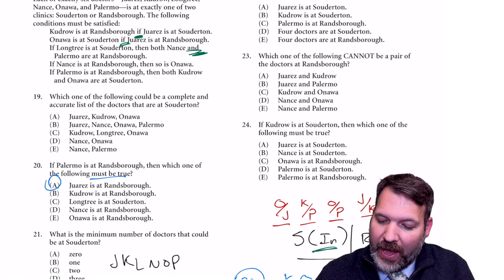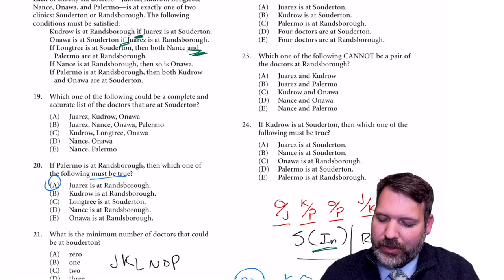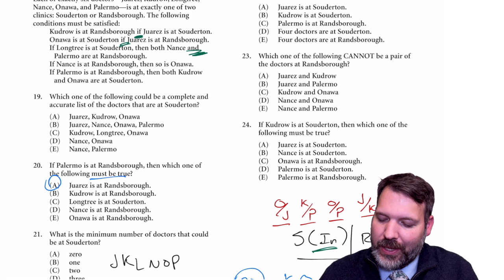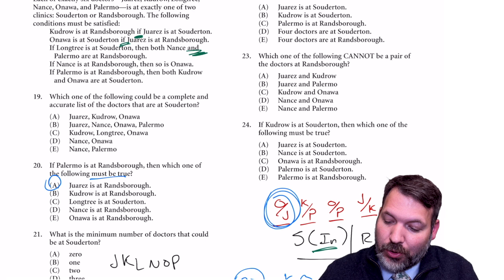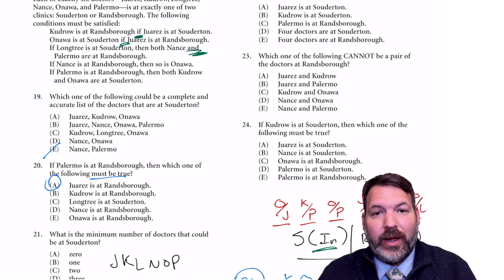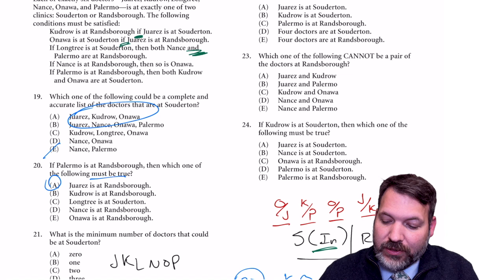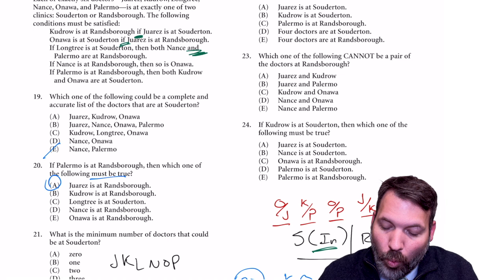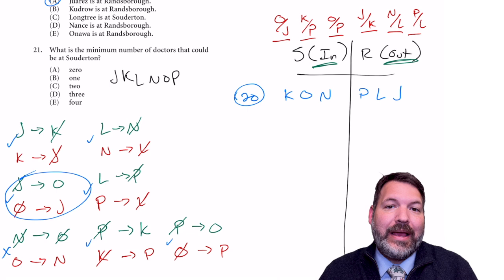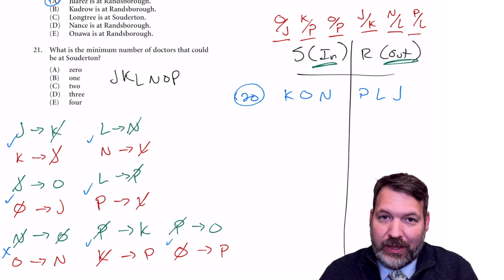Finishing up: the last clue gives us placeholders on the inside — at least one of K or P, and at least one of O or P. But again, P could take care of both, so those don't necessarily represent three distinct spaces. For question 19, a pick-a-clue question: which could be a complete and accurate list of doctors at S? Using the inside placeholders — either O or J must be in — I can eliminate answer E (no O or J). Be careful though: this means AT LEAST one of them, so having both O and J is fine.